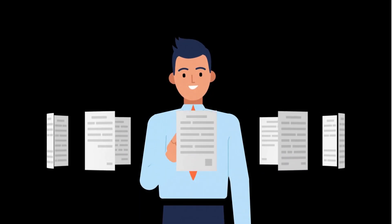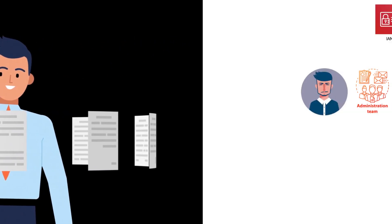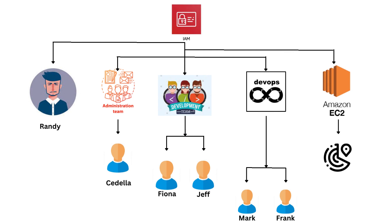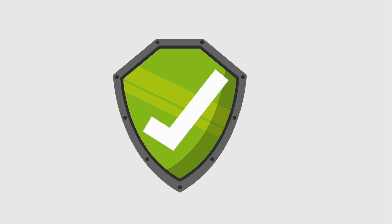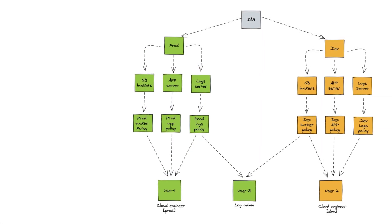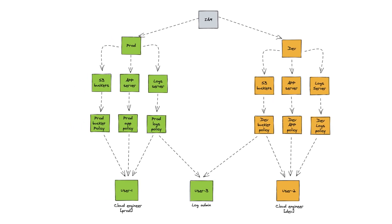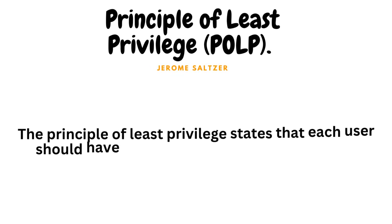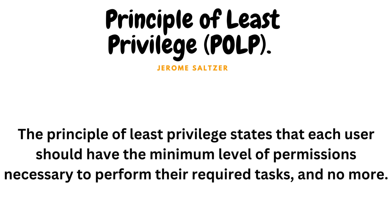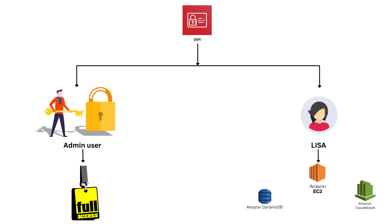To access AWS services, you'll need an AWS account. Within an account, you can create multiple users and manage their access using Identity and Access Management. Each user can have different levels of permission and access to specific services. This is particularly useful when multiple individuals or a team need access to AWS resources. By creating separate users, you can manage access and permissions more effectively while implementing the principle of least privilege — which states that each user should have the minimum level of permission necessary to perform their required tasks and nothing more.